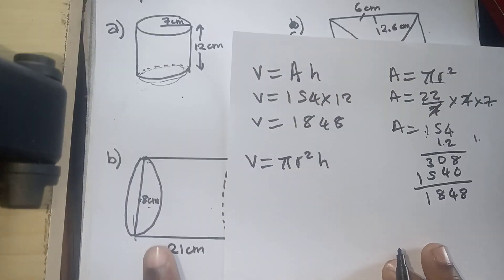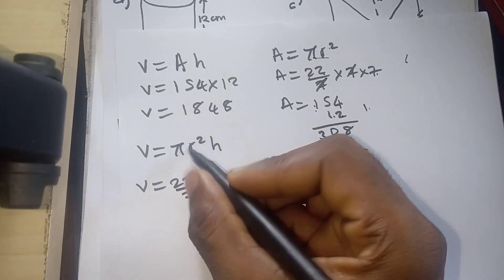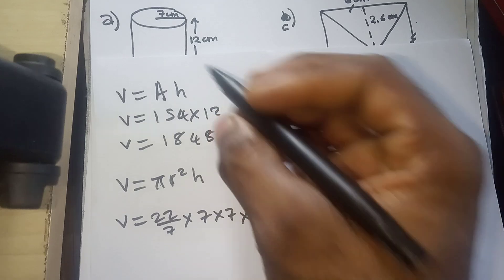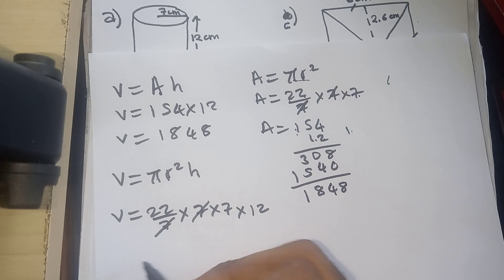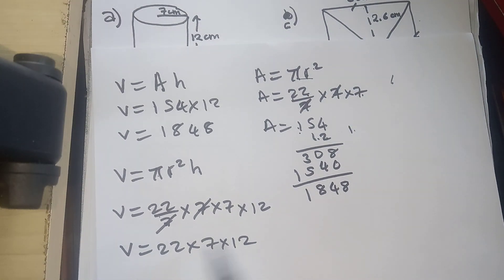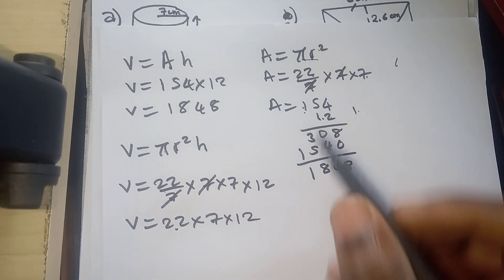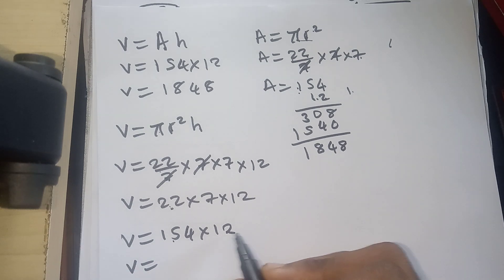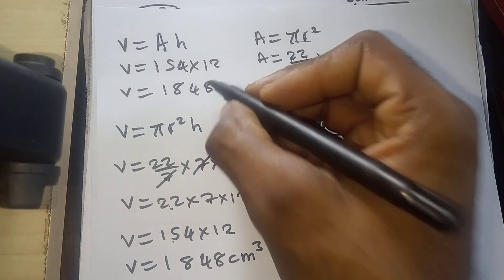Especially in a case where the radius is not a multiple of 7, you can say V is equal to 22 over 7 multiplied by the radius which is 7, squared — so 7 times 7 — multiplied by the height which is 12. Then reduce your numbers: 7 into 7 is 1, so you have 22 multiplied by 7 multiplied by 12. As we found before, 22 times 7 is 154, multiplied by 12 gives 1848 cubic centimeters.